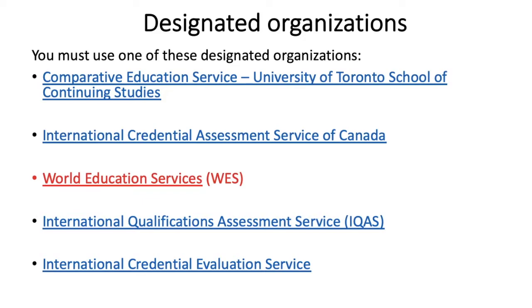There are five designated organizations listed by IRCC. The first is Comparative Education Service, which is University of Toronto School of Continuing Studies. The second is International Credential Assessment Service of Canada. The third is World Education Service (WES), which we will talk about shortly. The fourth is International Qualification Assessment Service, and the last is International Credential Evaluation Service.